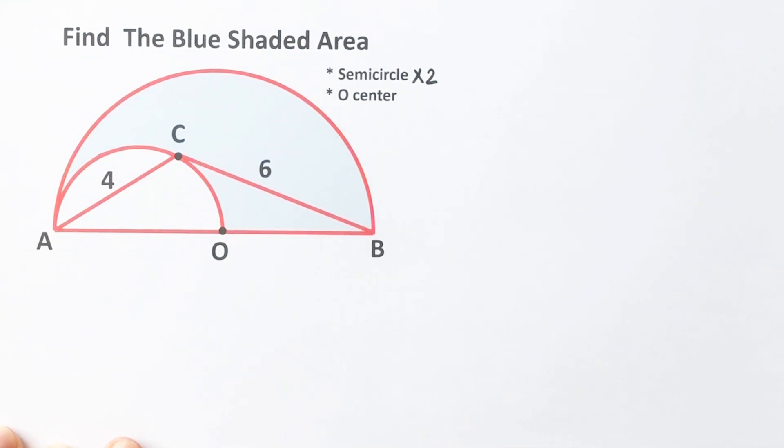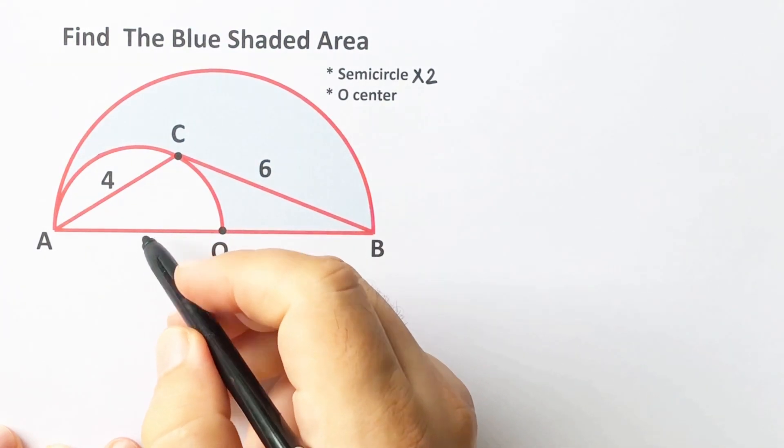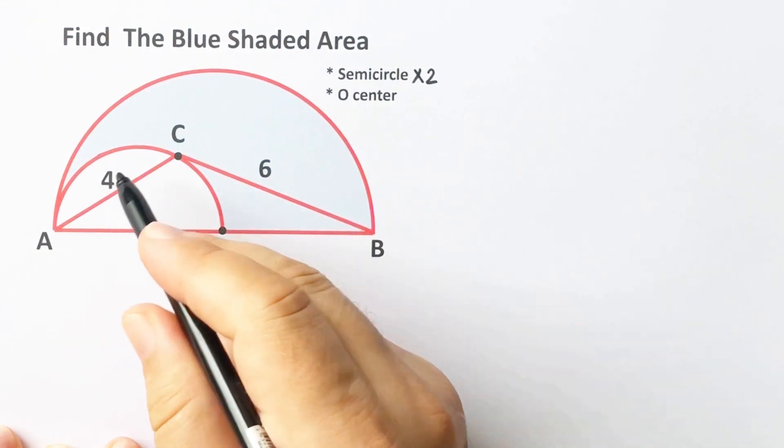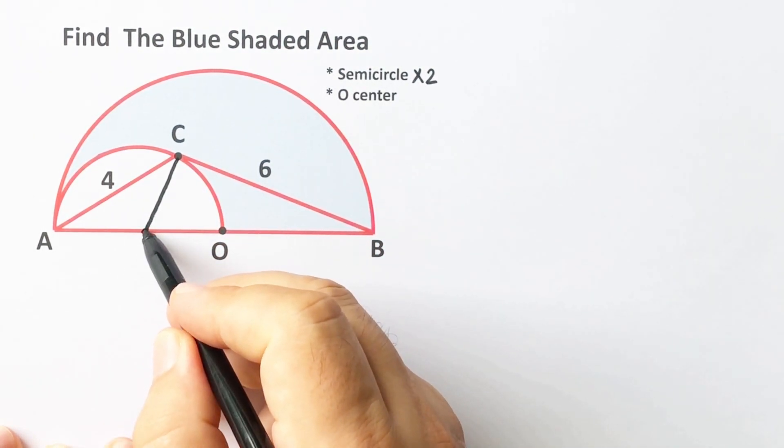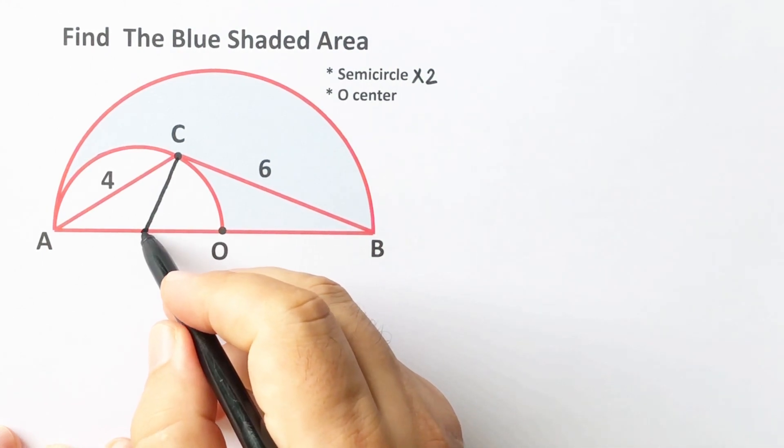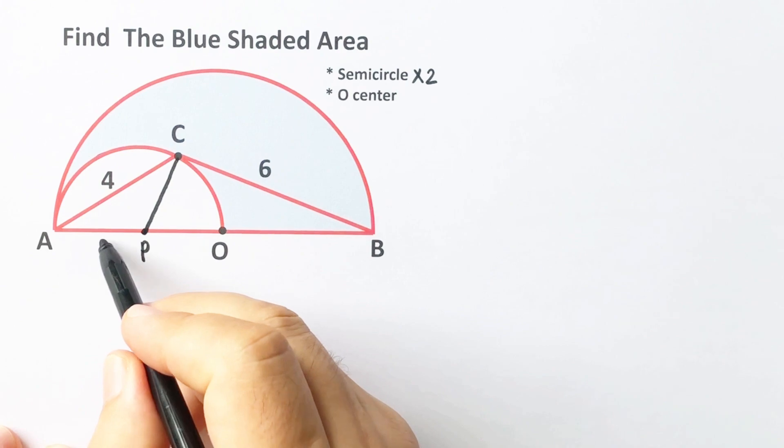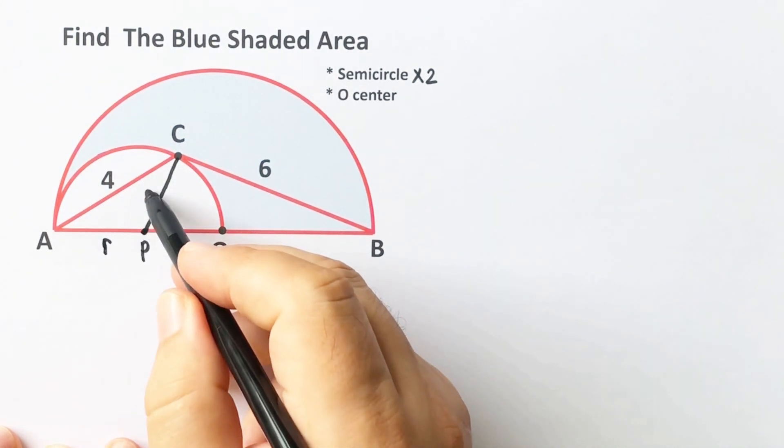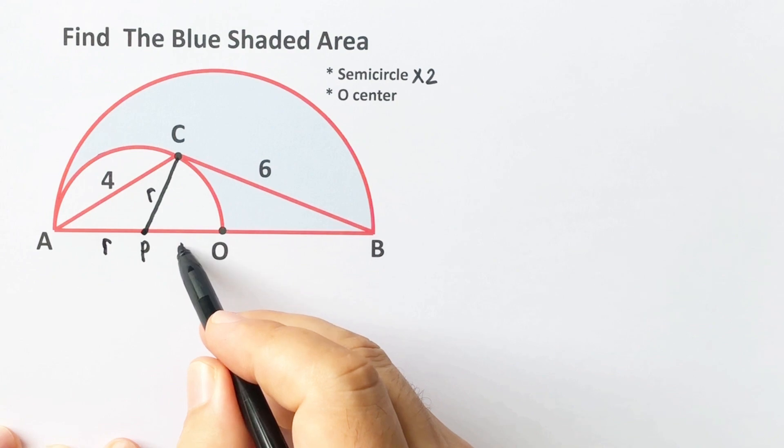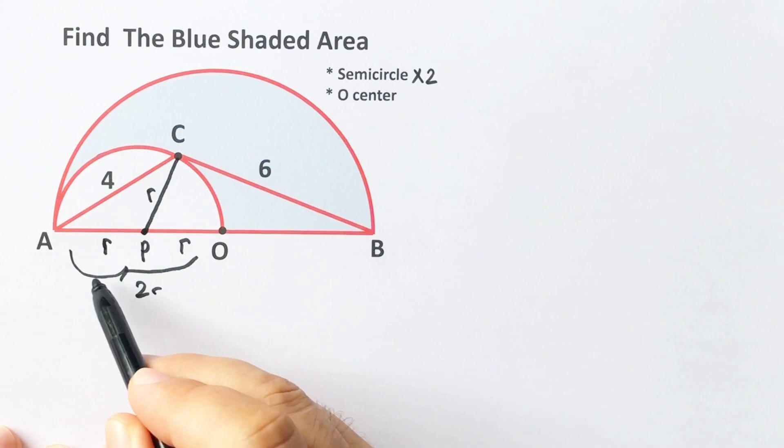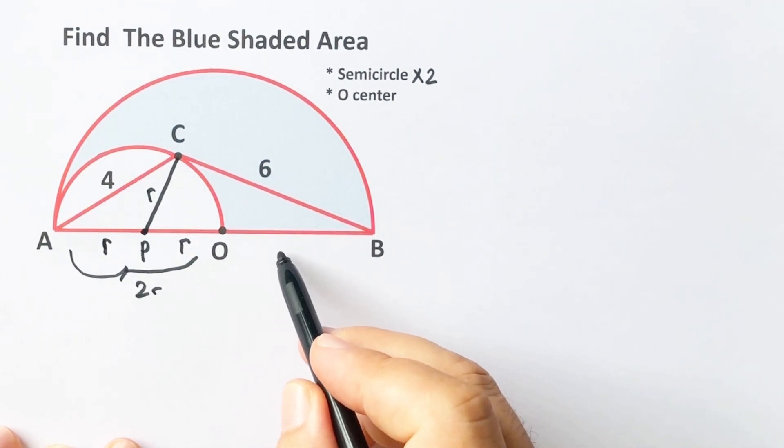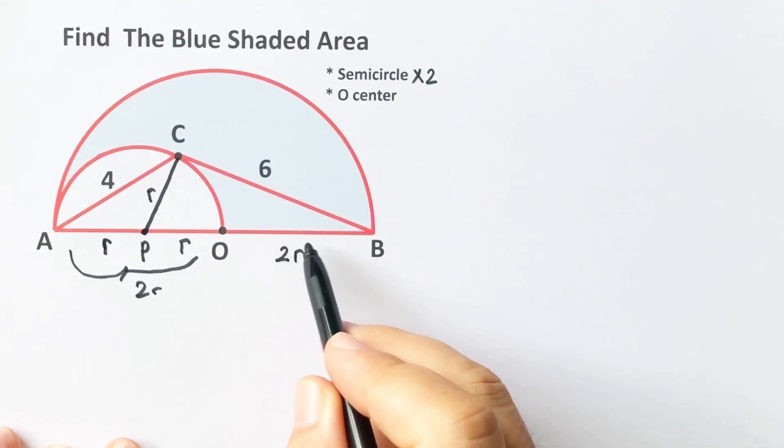Okay, first of all let's call the center of the small semicircle P. This length must be radius, right? Let's call this point P. This length is radius, and here is radius, and then this length is also radius. Radius of the biggest semicircle equals r units, right?